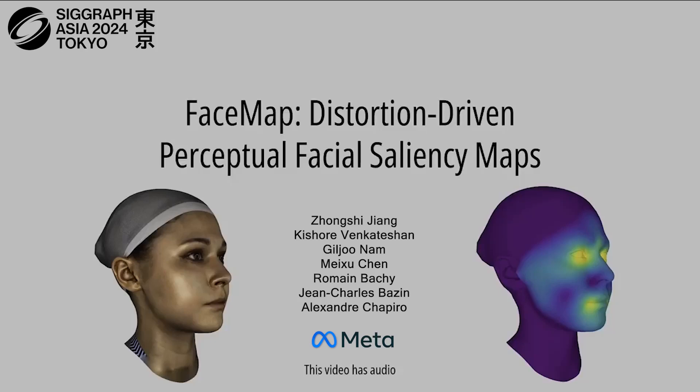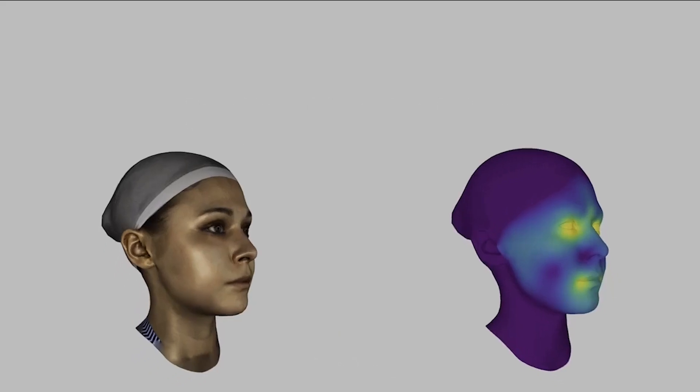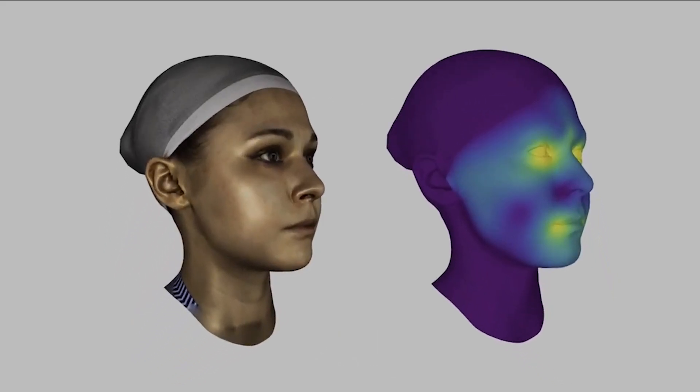Humans are uniquely sensitive to faces. Recognizing fine detail in faces plays an important role in social cognition, identity, and it is key to human interaction. In this work, we present the first quantitative study of the relative importance of face regions to human observers.